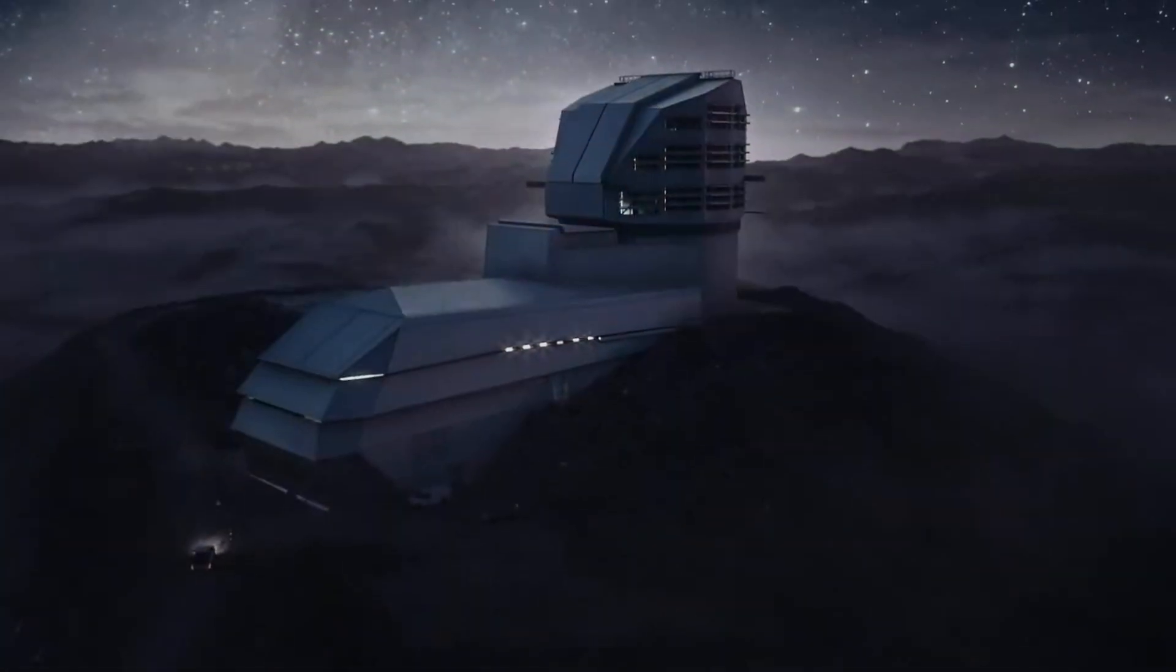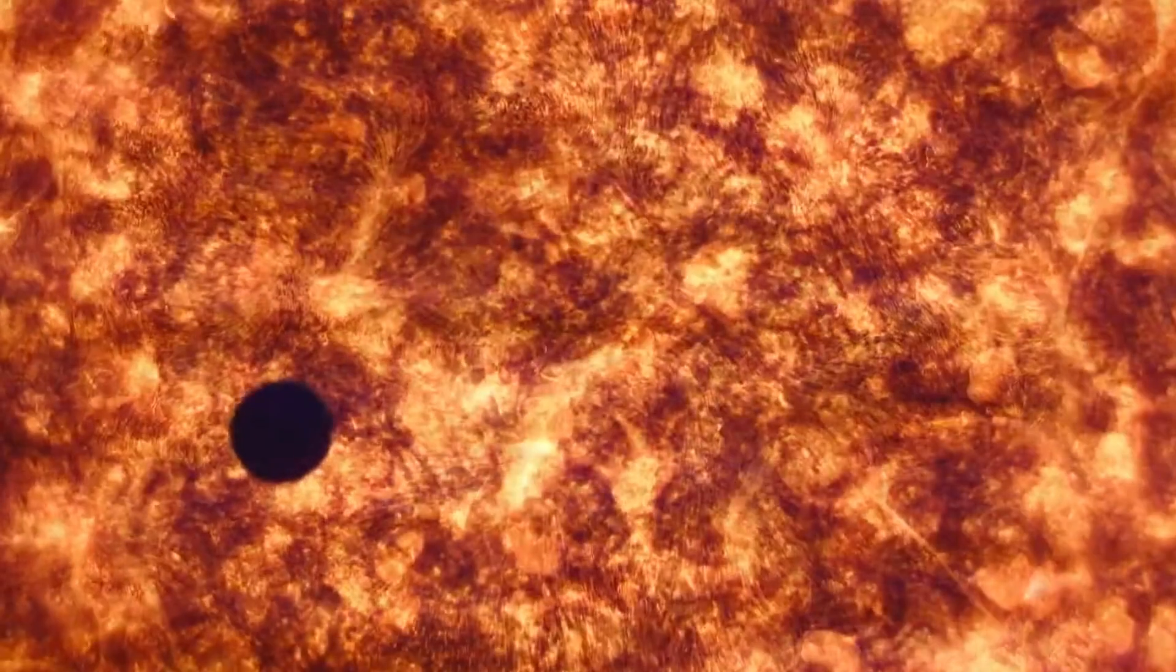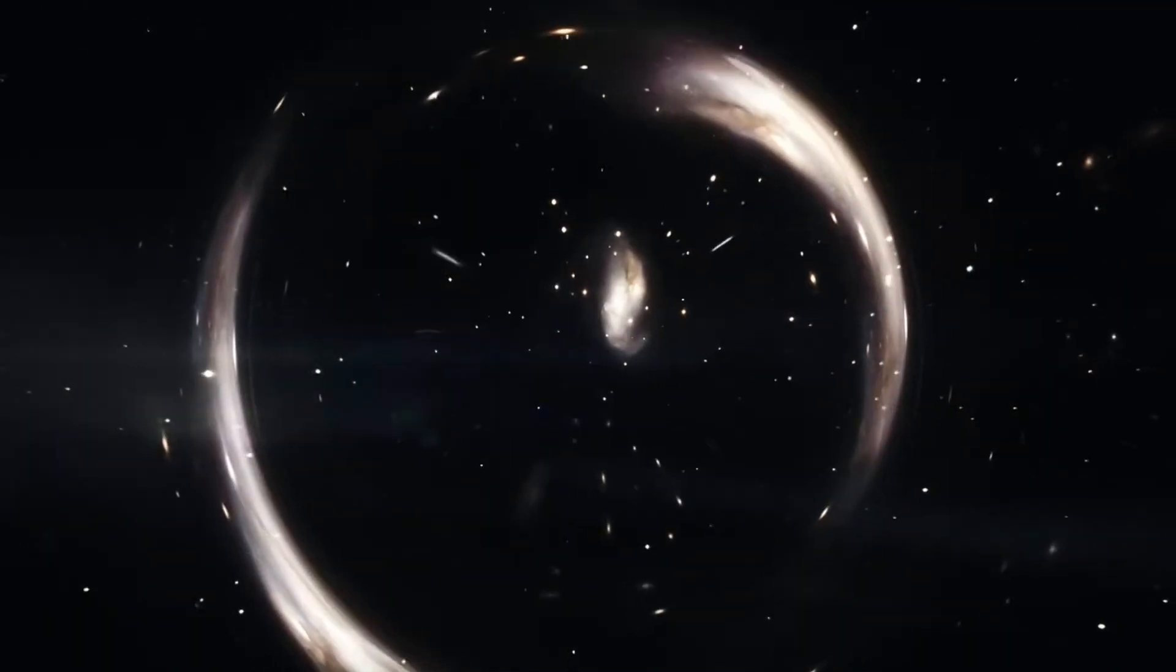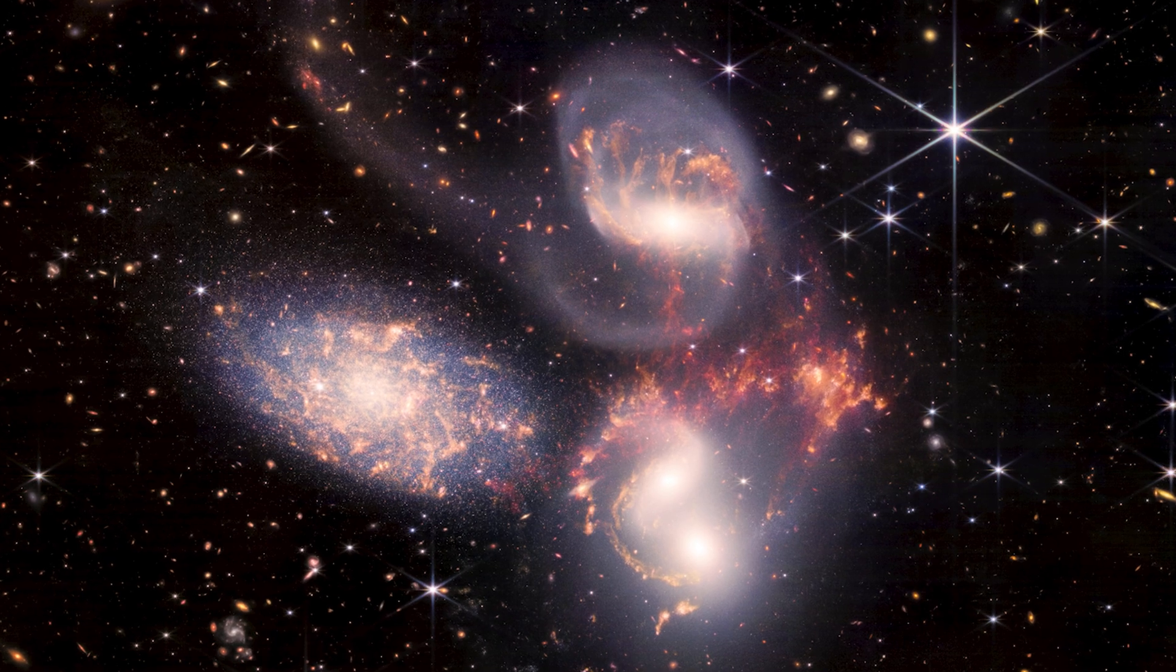So where Rubin will scan vast regions of the sky to catch transient events and map millions of objects, Webb will zoom in on targets for extraordinary detail. Both are flagship facilities but serve complementary roles. There is no competition or comparison between them.